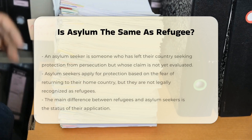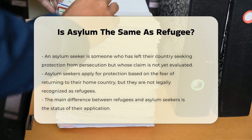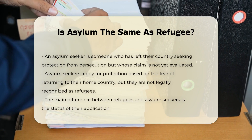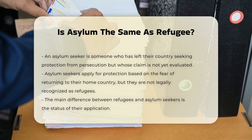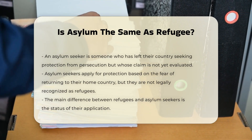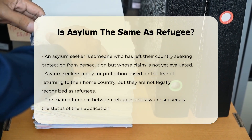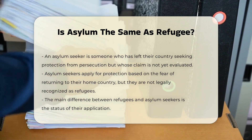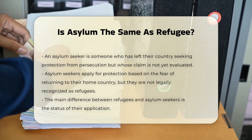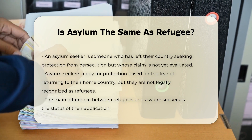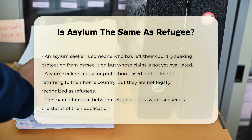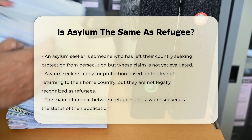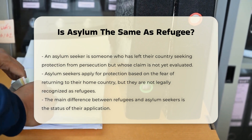Definition of an asylum seeker. An asylum seeker is someone who has left their country and is seeking protection from persecution or serious human rights violations in another country. However, their claim has not yet been evaluated or recognized as valid. Asylum seekers apply for protection on the grounds that returning to their home country would lead to persecution, but they are not yet legally recognized as refugees.